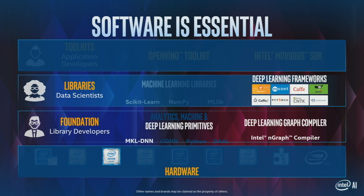We have what we call NGraph. It's a compiler which is framework neutral, and it plugs into the frameworks. It supports various architectures — it's an abstraction layer or a glue which supports various frameworks and then various hardware architectures at the bottom. Recently, we upstreamed NGraph Bridge into TensorFlow.